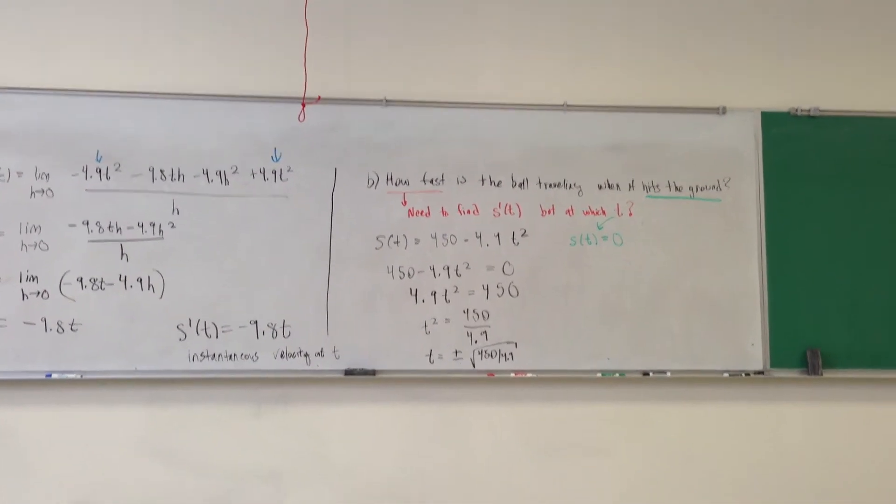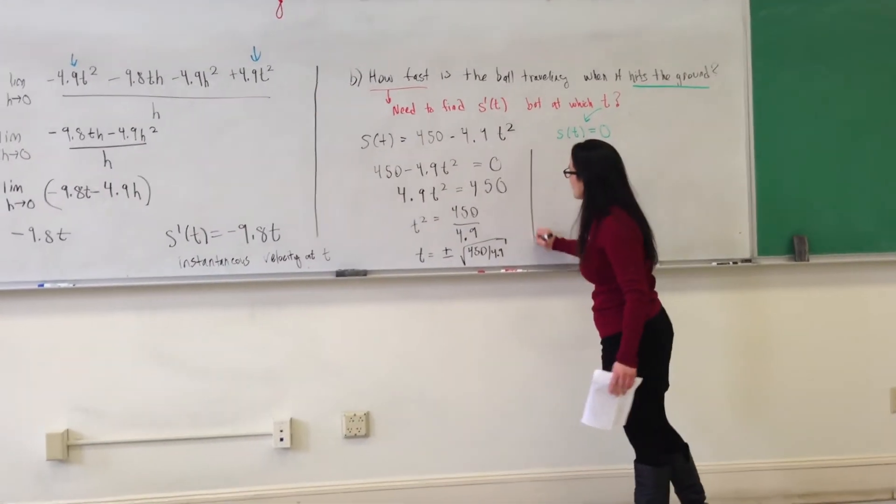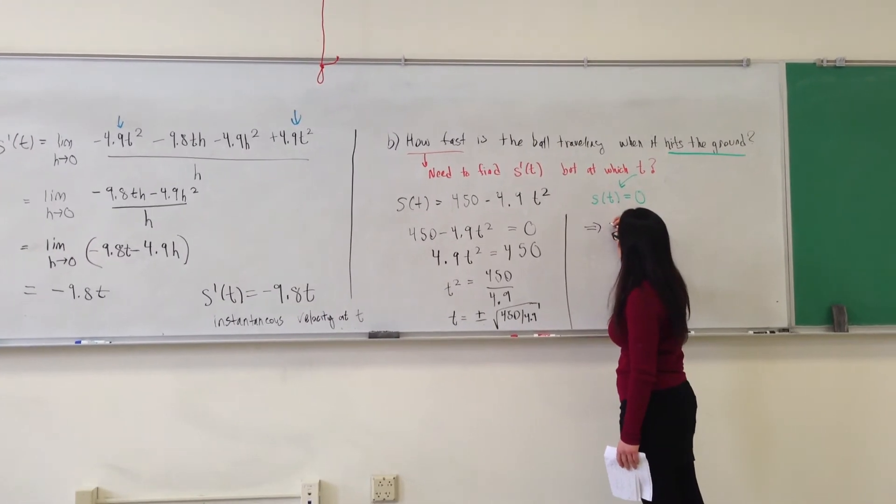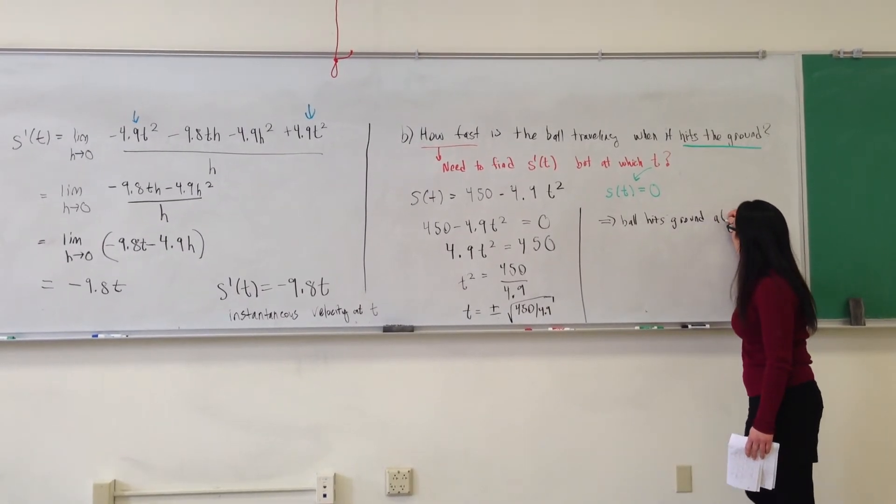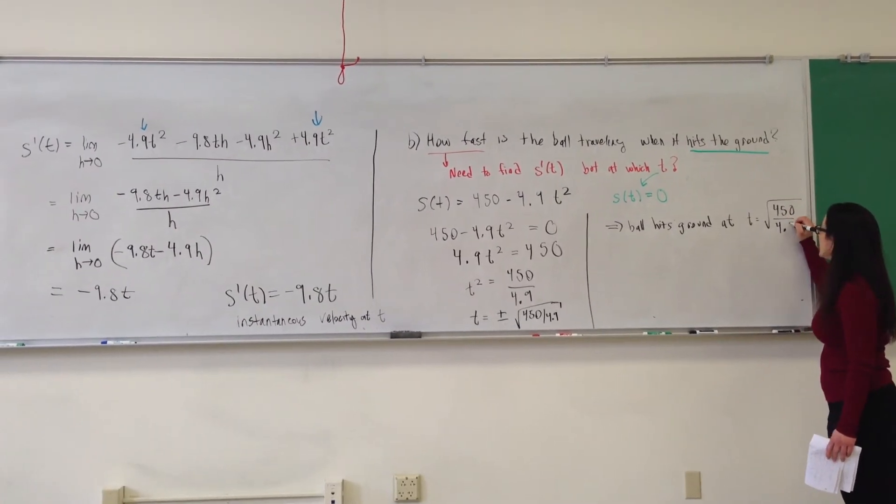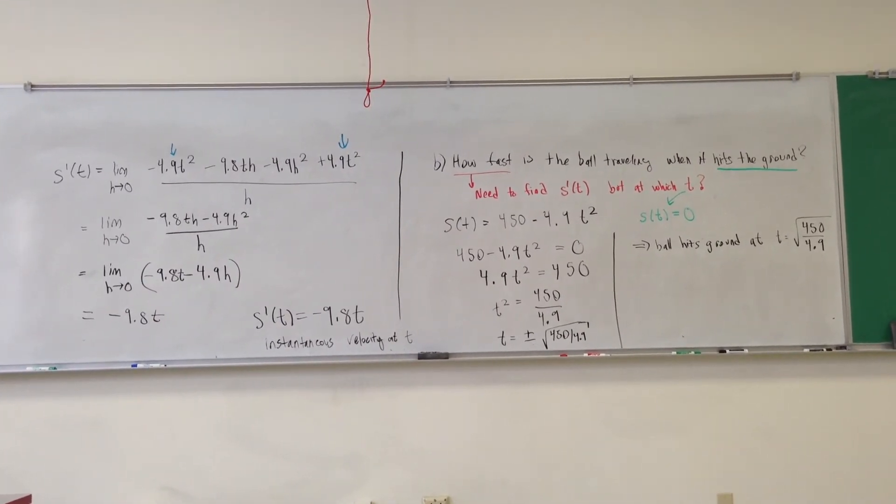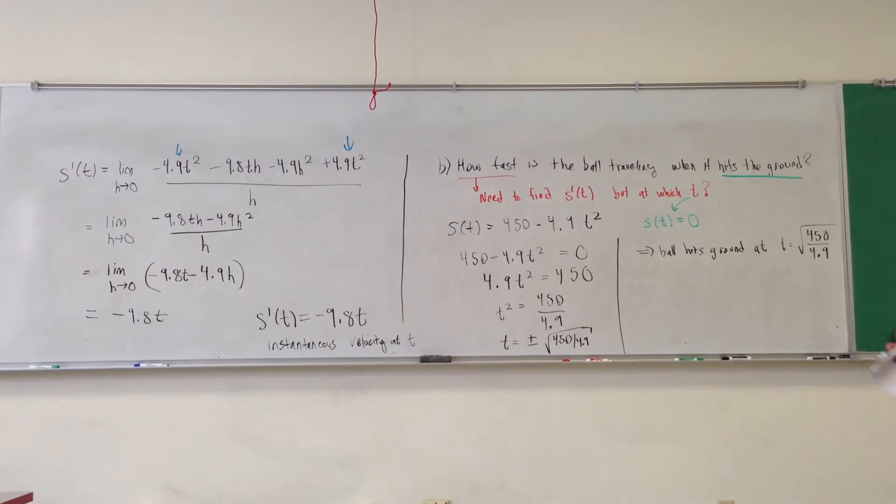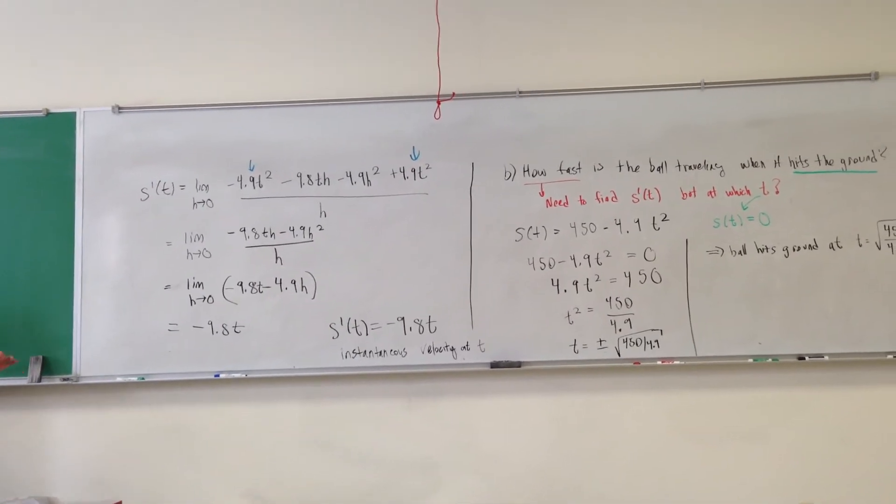But now you're all telling me we don't want both of those solutions, right? Which one do we want? Positive. The positive one, of course, because we're talking about the time when this ball is going to hit the ground. So since we're talking about time, that ball hits the ground at t equal to the positive square root of 450 divided by 4.9. And I don't have that number. So plug that into your calculators if you want an approximation or just work with the exact number. It's usually better anyways.